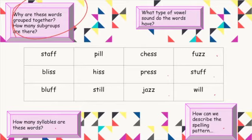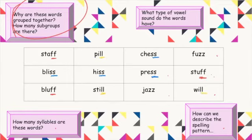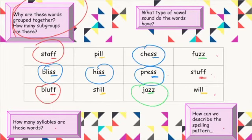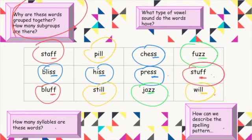I noticed that some of these words end in two F's, like staff, bluff, or stuff. Some end in two S's, like bliss, hiss, chess, press. Some end with two L's — still, pill, will. And some end in two Z's — jazz and fuzz. So we have four subgroups. They all end in two consonants: either F, L, S, or Z.